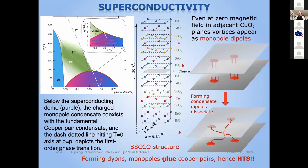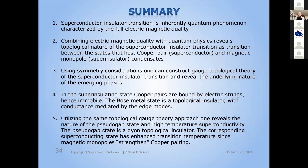Going to the superconducting state, we can show that the high-temperature superconducting state is actually a state where a fundamental Cooper pair condensate coexists with a monopole condensate — or a remnant dion condensate. This is the reason we have high-temperature superconductivity: monopoles provide an additional glue that strengthens Cooper pairing.